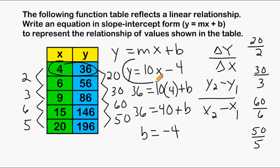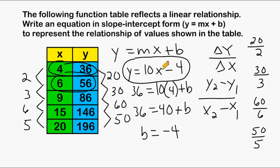So y equals 10x minus 4 is the equation that represents the relationship of the values shown in this table. If we plug any pair of values into our equation, we get a true statement. Plugging in x equals 6: 10 times 6 is 60, and 60 minus 4 is 56. Or plugging in x equals 9: 10 times 9 is 90, minus 4 is 86. So all of the values check out. Let's go ahead and do another example.